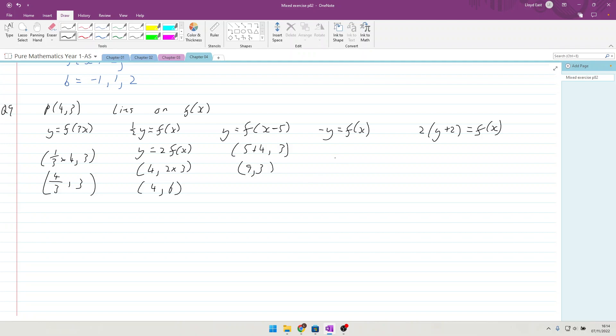Minus y equals f(x), that's the same as y equals minus f(x), and just like question 2, you are multiplying by minus 1 on the outside affecting the y axis. You end up with (4, -3). Ultimately, with minus f(x), it's the same as doing a reflection in the x axis.